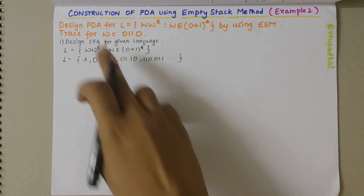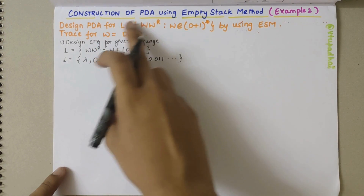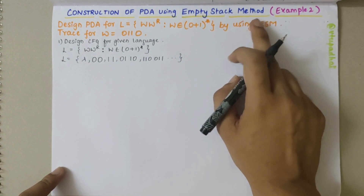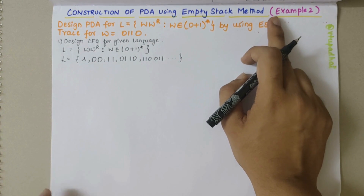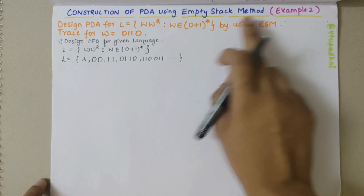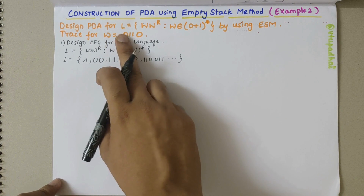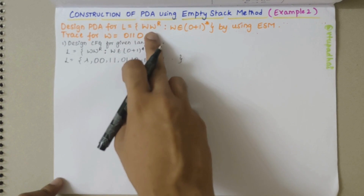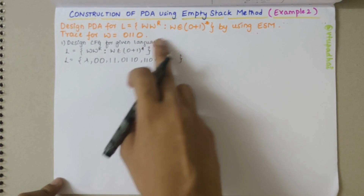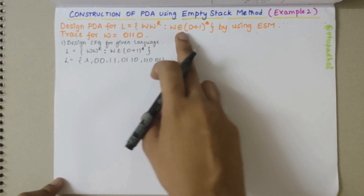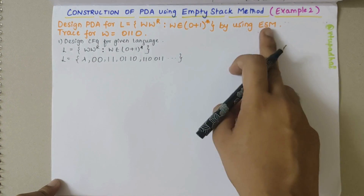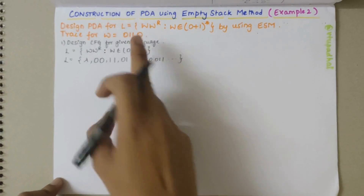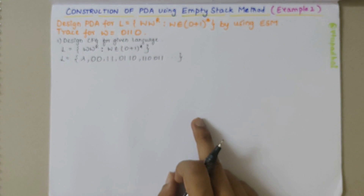In this video we'll be looking into construction of a PDA using the empty stack method. This is the second example. The problem statement says to design a PDA for the given language w·wR, where w belongs to {0,1}* using the empty stack method, and we need to trace for a given string.